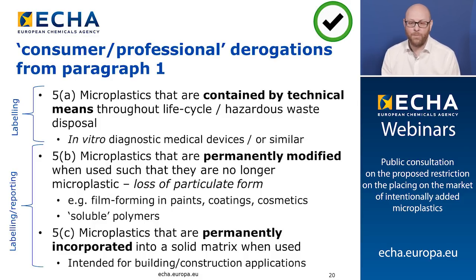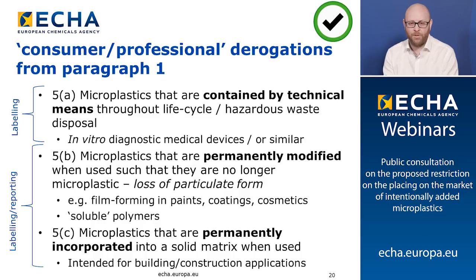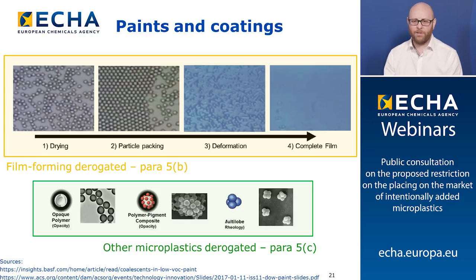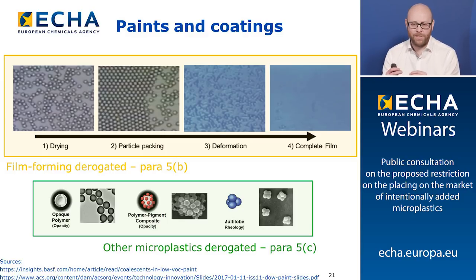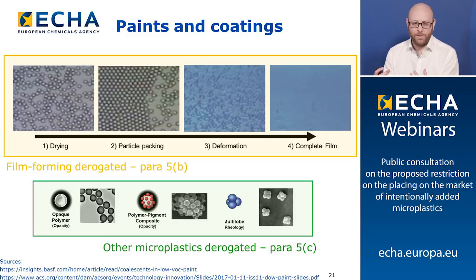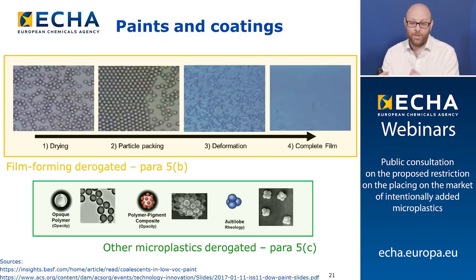Derogation 5c covers microplastics permanently incorporated within a solid matrix when used — intended for building and construction applications where microplastics end up embedded within another material and cannot be released. An example for paints and coatings: film-forming particles organize and deform during drying of the film and are no longer microplastics — derogated under 5b. Other microplastics in paints that don't form a film but are embedded during the film-forming process would be derogated under 5c as they're permanently included within the film. Labeling and reporting are required for 5b and 5c uses.